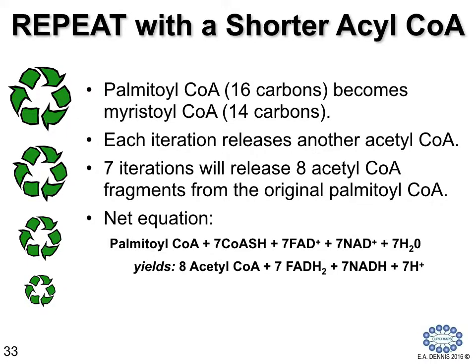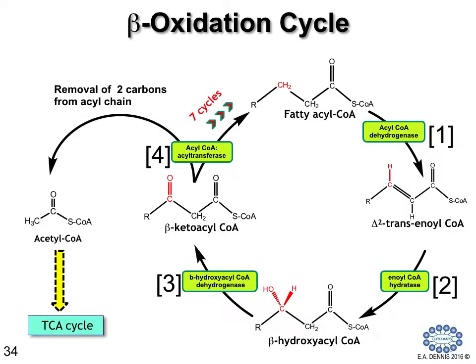Summarized here: palmitoyl-CoA becomes myristoyl-CoA with two fewer carbons, and with each iteration releasing another acetyl-CoA. Seven iterations result in eight acetyl-CoAs from the original palmitoyl-CoA. Schematically, a fatty acyl-CoA undergoes reaction with a dehydrogenase, a hydratase, and another dehydrogenase to make the beta-keto acyl-CoA, and then with release of acetyl-CoA over seven additional cycles, one ends up with eight acetyl-CoAs, which are fed into the TCA cycle.